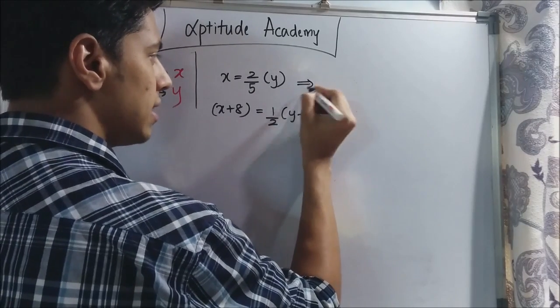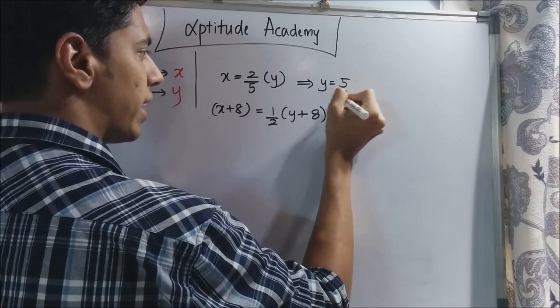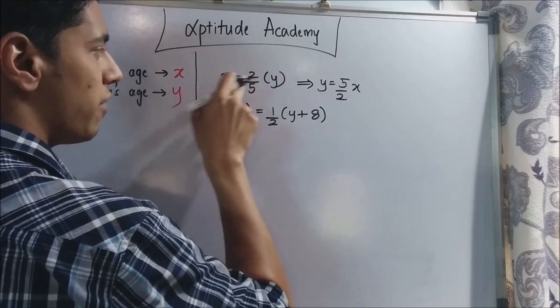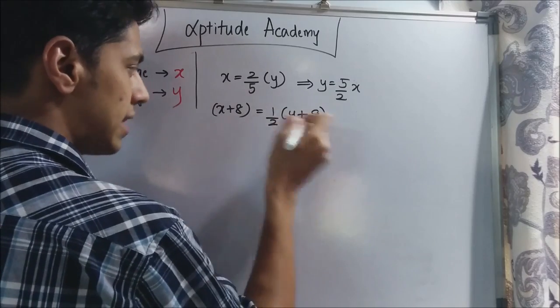Now just simple simplification. Let us keep this as y is equal to 5 by 2 of x. It is the same thing. I have just taken 5 and divided by 2. Now let us simplify this part.